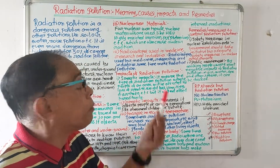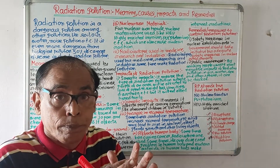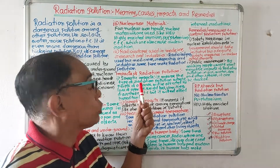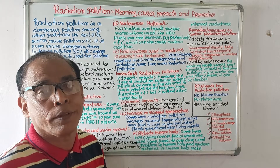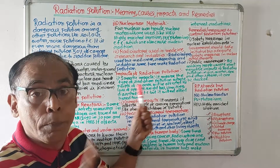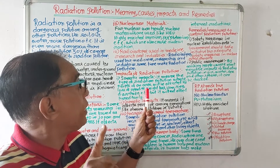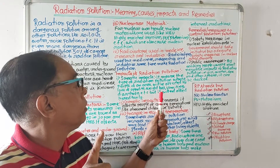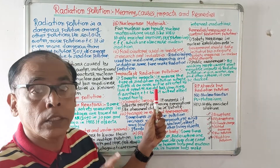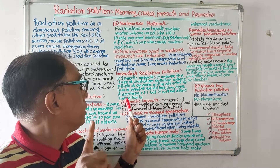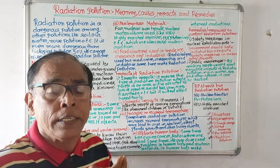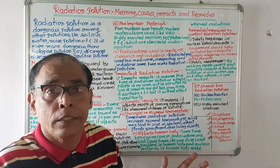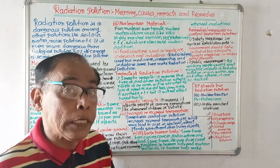Now let us discuss impacts of radiation pollution. By radiation pollution, what will be the problems? The first problem is somatic impacts. It means the type of impact where people of an area will be affected by loss of weight, loss of appetite, vomiting, diarrhea, etc., but it will not affect them hereditarily. The first impact is somatic impact.